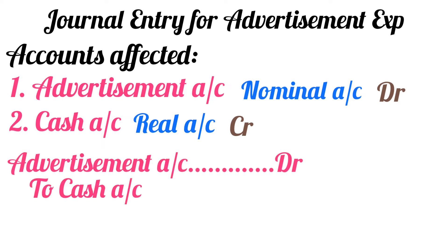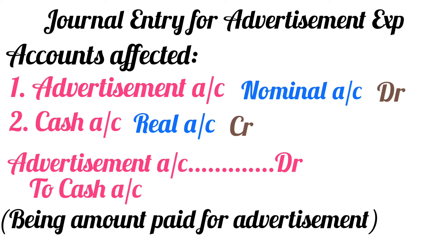So your journal entry becomes: Advertisement Account Debit (or Advertisement Expense Account Debit) to Cash Account. The narration will be 'Being amount paid for advertisement.' You can also write 'Being advertisement expenses paid' or 'Cash paid for advertisement' — you can write the narration in your own words.